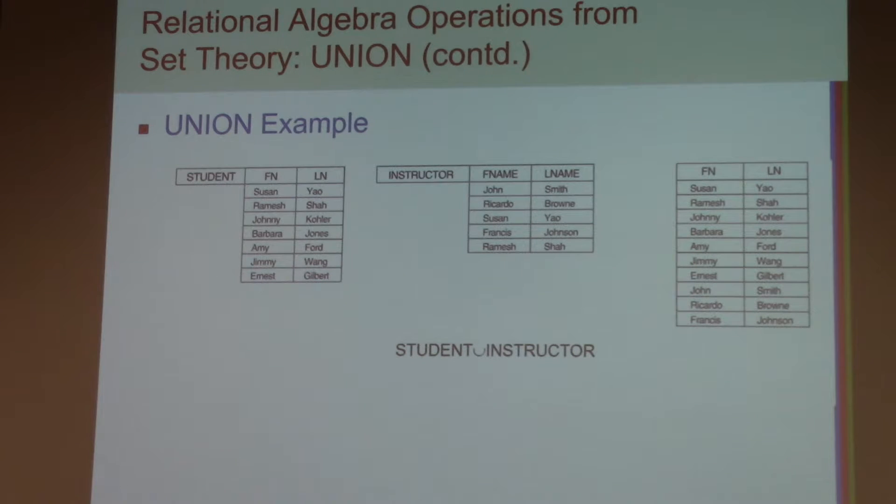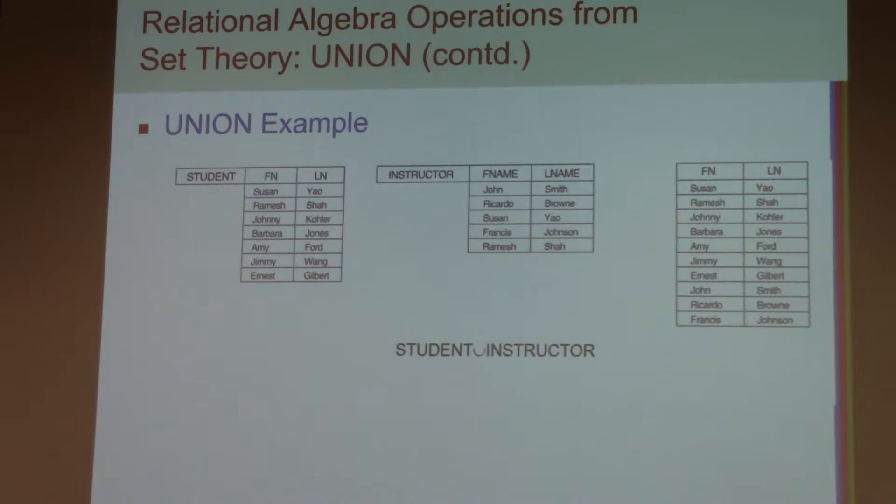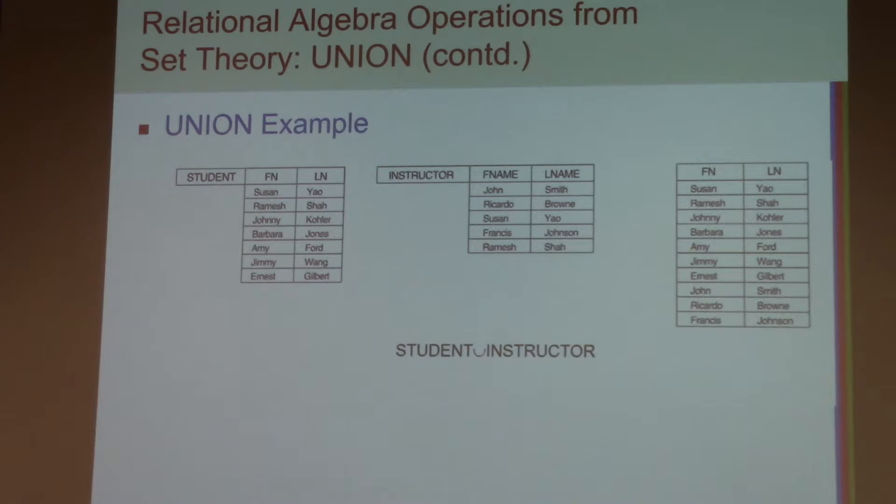So we will see example. So I want a union student and instructor. Even though their names, attribute names are different. FN, FName. Is it the problem? No, it doesn't matter. Number of attribute, one, two. One, two. So it's the same. And their type is the name inside. So it's not a big problem. If you are not sure, you can change the name. Rename FN to the FName. Then union. But in this case, you don't have to do that. Just combine into one.